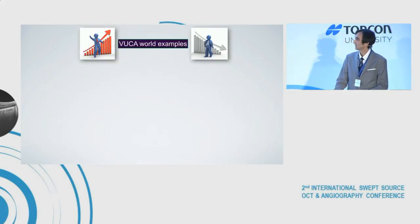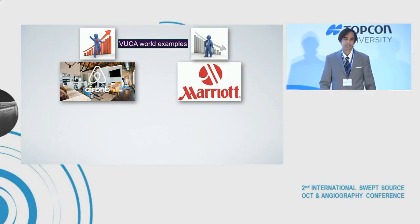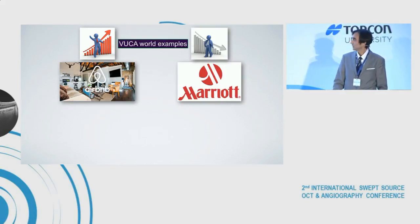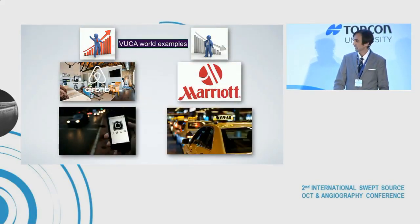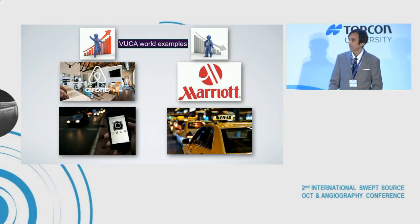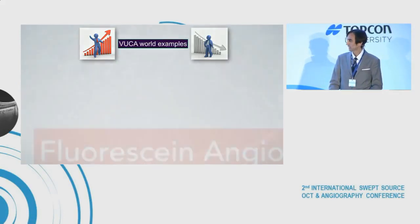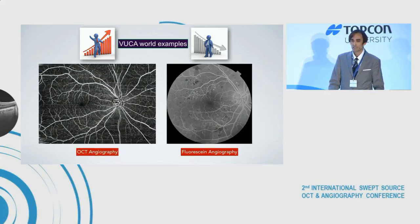Some examples: Airbnb is leading the lodging business — it's now over Marriott. Uber is leading car transport in cities, surpassing the conventional taxi. Applied to the field of technology, I would say the same happens with OCT and Geography — it is slowly surpassing conventional fluorescein angiography.